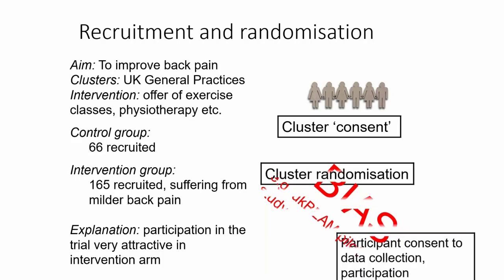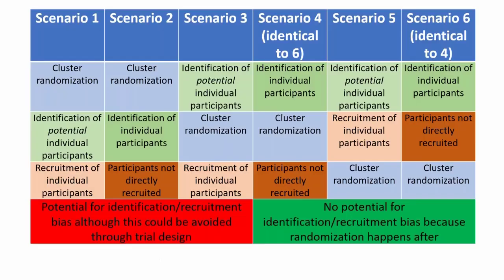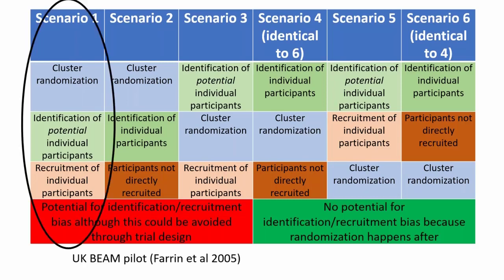In that case, it just wouldn't be a fair comparison between those different types of patients recruited in the control and intervention groups. The best thing to do to avoid this is to recruit participants before the clusters are randomised — in between recruiting the clusters and randomising the clusters. There's a table in the full documentation showing six different scenarios of the order in which you do randomisation, identification, and recruitment. Three on the left are scenarios in which bias is possible, and the first scenario is the one I've just shown you in the UK BEAM study.